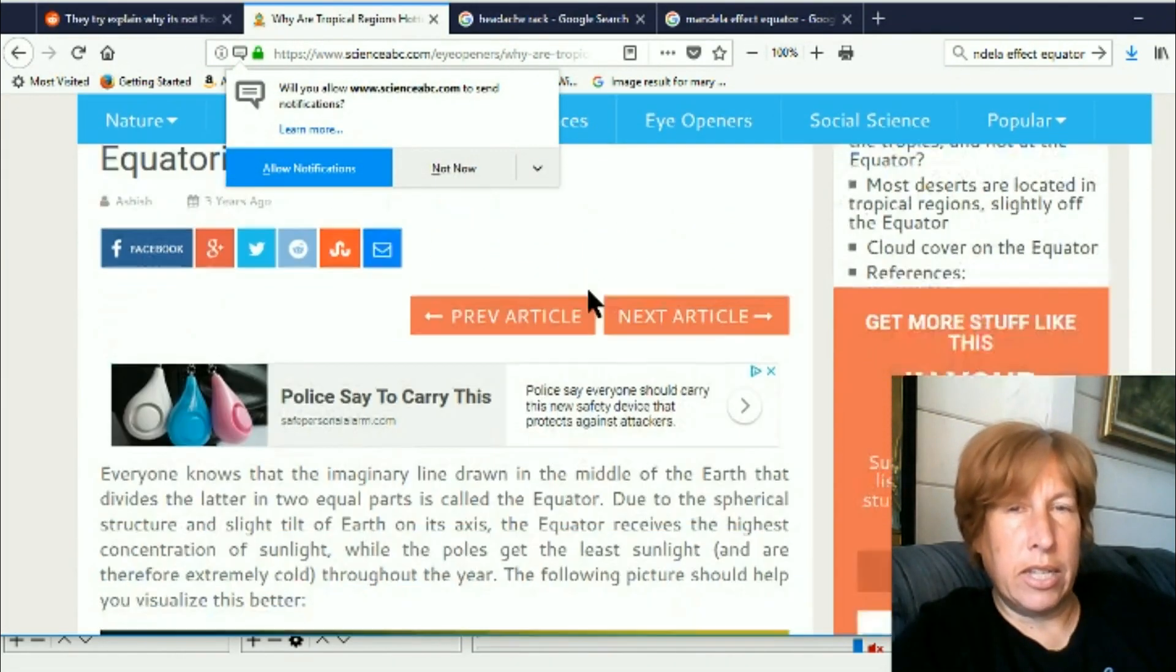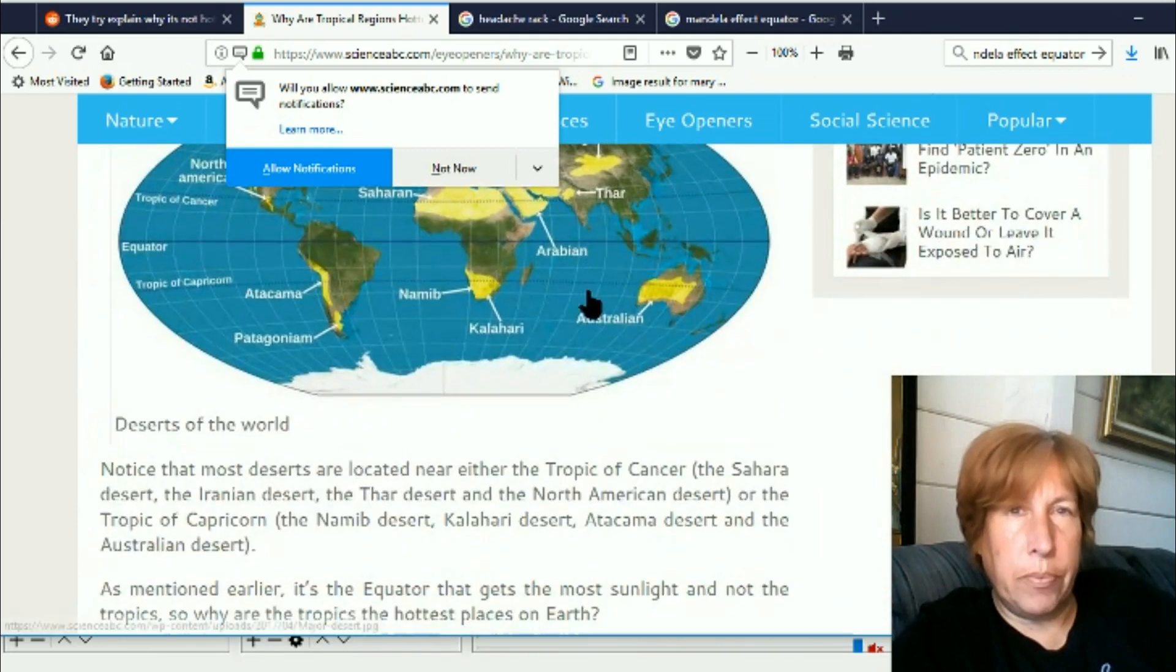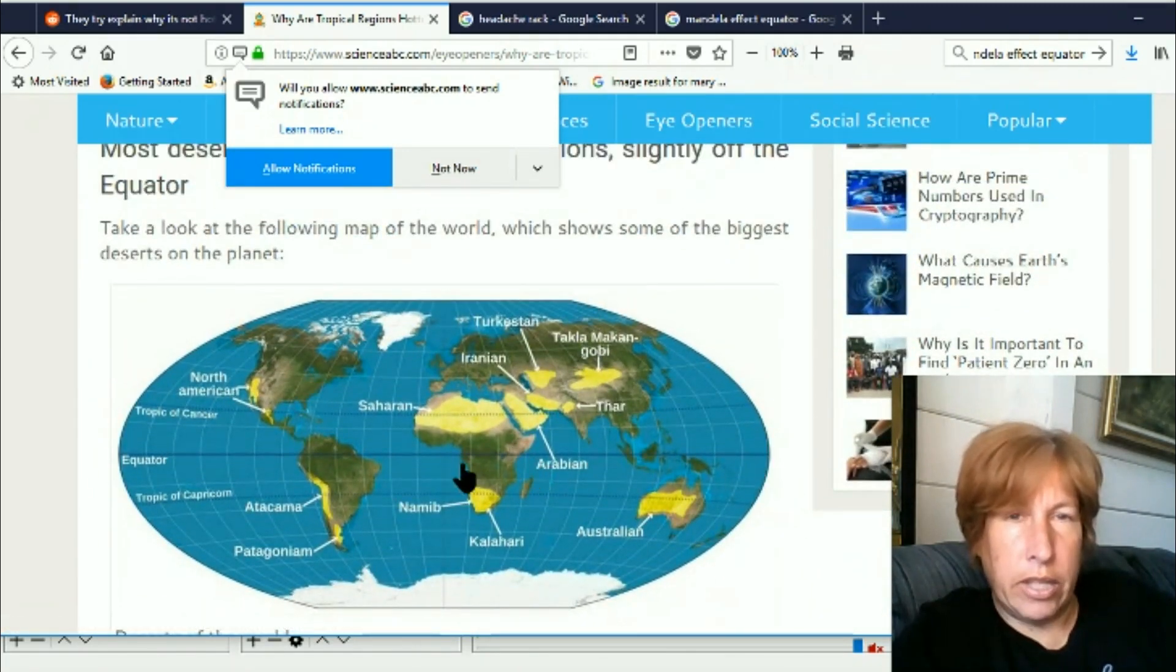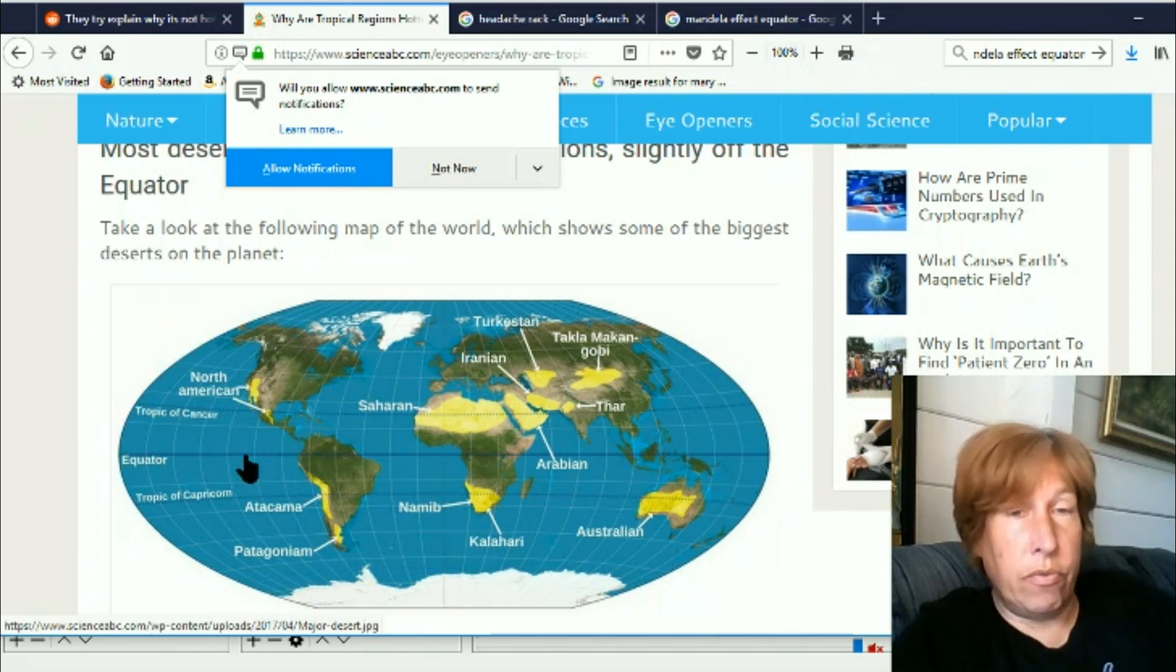This is the link that he is posting here. You can see the equators here and these areas along the equator are now very green and the hot areas are back through here which they are calling the tropics. Now in my old timeline the equator region was the tropics but now apparently the tropics are just outside the equator.